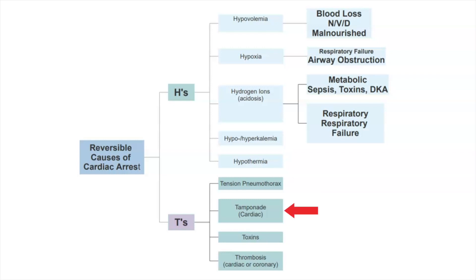Next is cardiac tamponade, which is a buildup of fluid around the heart. Suspect this for patients who are post-cardiac surgery, post-cath lab, or aortic dissections. For these patients, we're going to want a bedside ultrasound or echo, and to treat this we're going to want to remove the fluid.